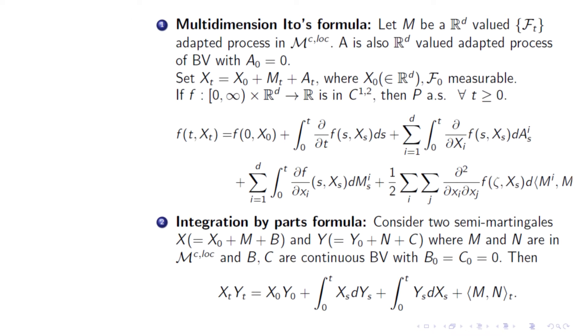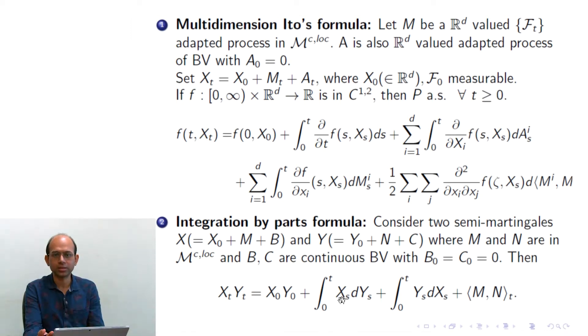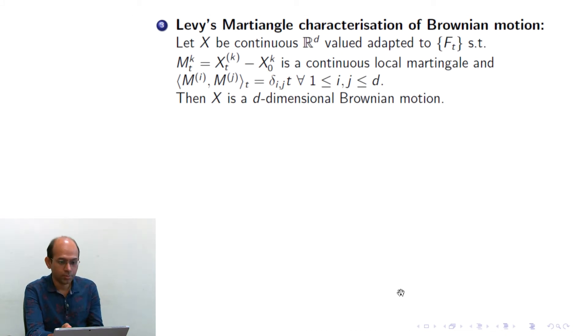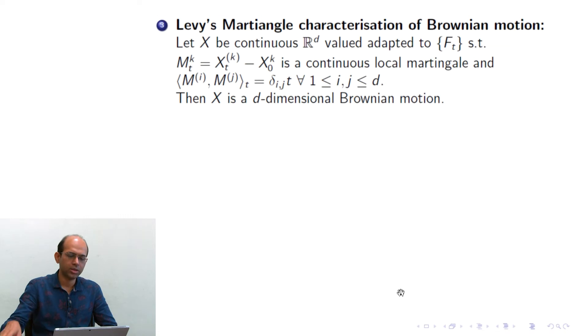If you compare this formula with the classical calculus integration by parts formula, you get all the terms except the quadratic covariation term ⟨M, N⟩_t. This extra term is related to one property of Brownian motion: Brownian motion has quadratic variation equal to the identity function, meaning the quadratic variation process of B is nothing but time itself. We will see the detailed proof of that in another class.